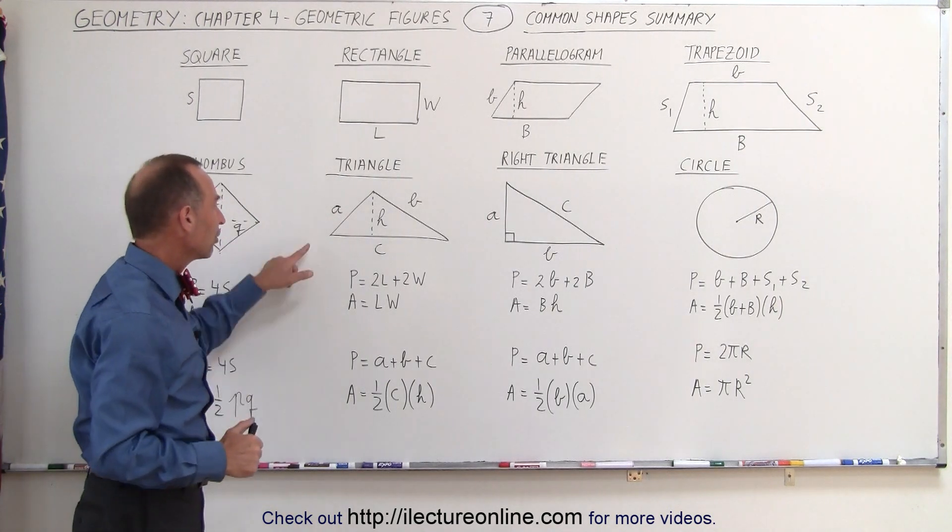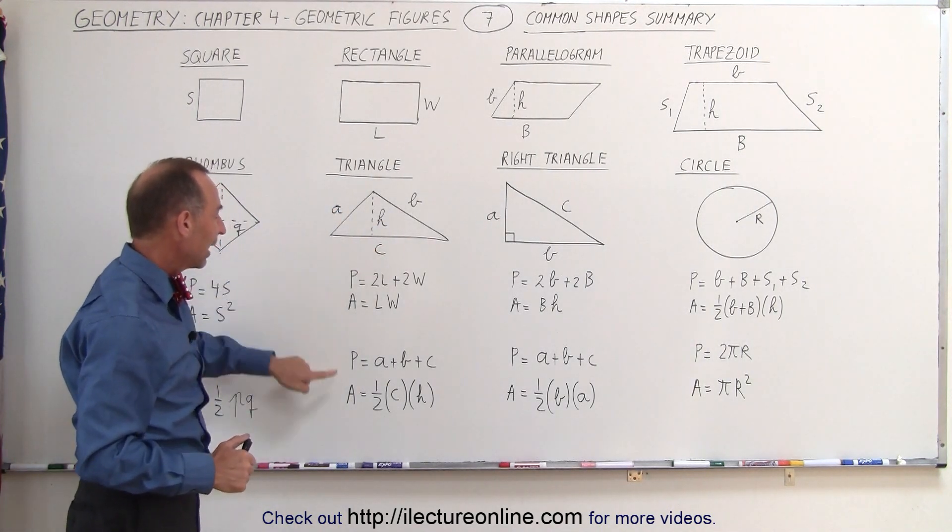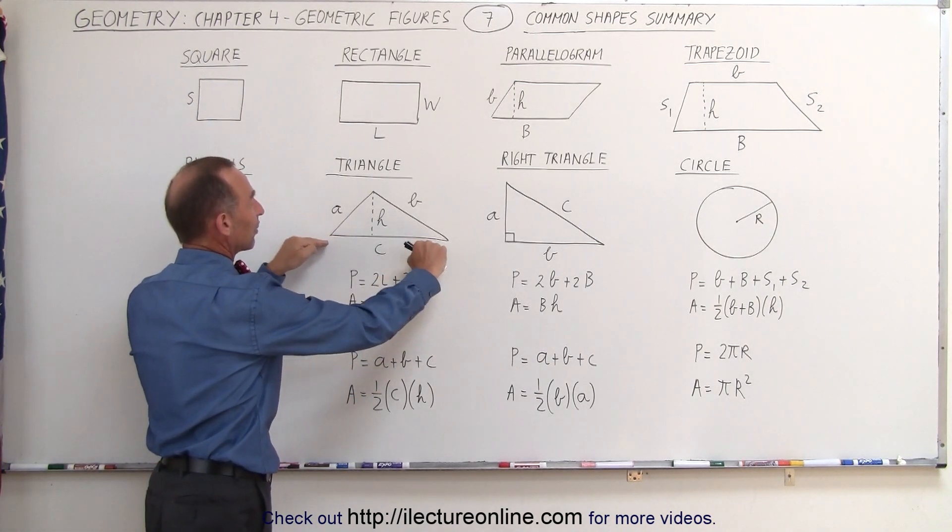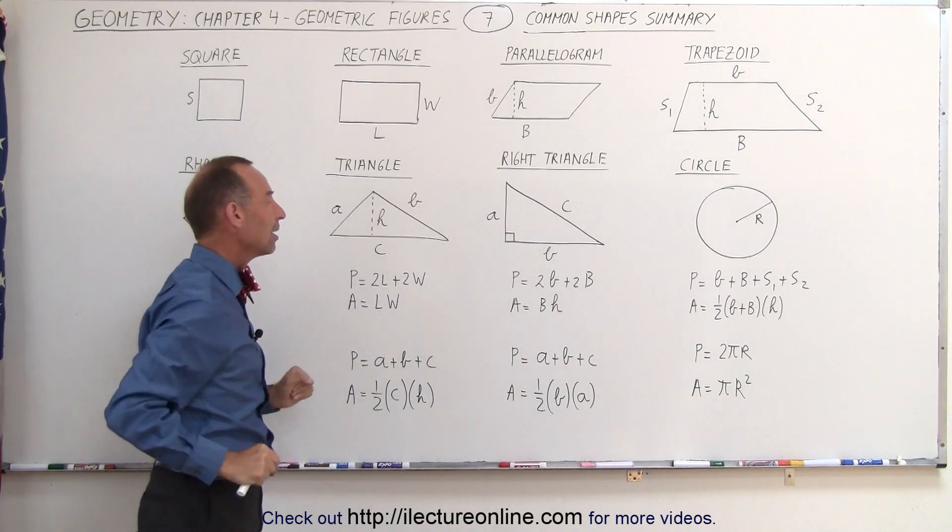On the triangle, the perimeter is simply the sum of the three sides, and the area is one-half the base times the height. In this case, the base is the flat side at the bottom of the triangle. That's c times the height h.